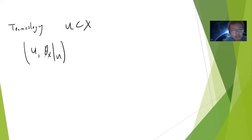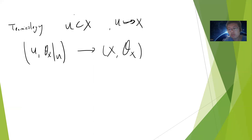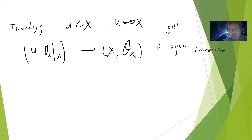Another terminology: if you have U as an open subset of X and take the natural inclusion map, you get a scheme morphism from U, O sub X restricted to U, into X, O sub X. This is called an open immersion. As I said, it's not obvious that U is a scheme, so you need to think a little bit.